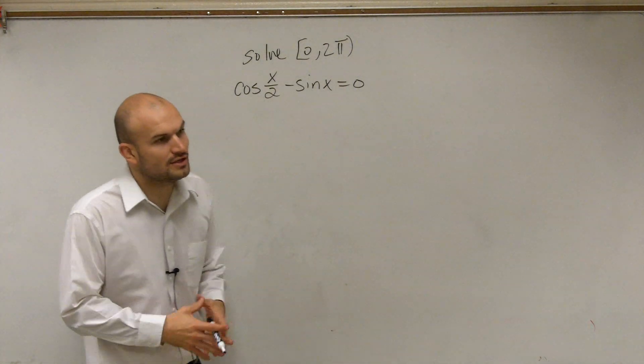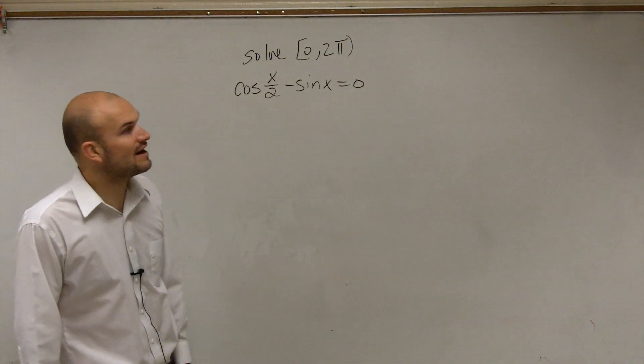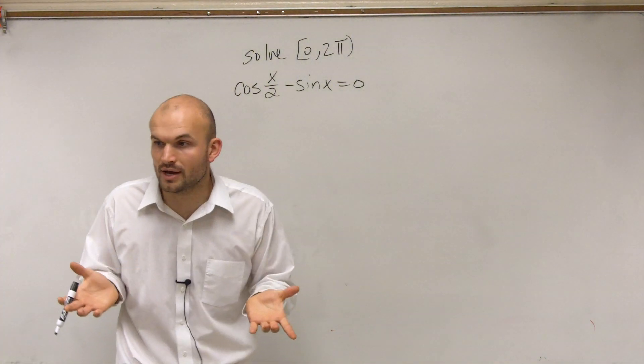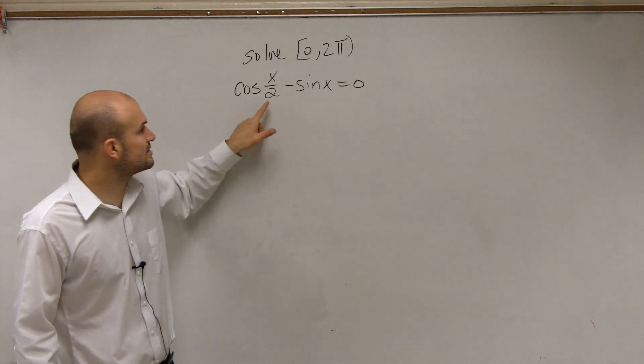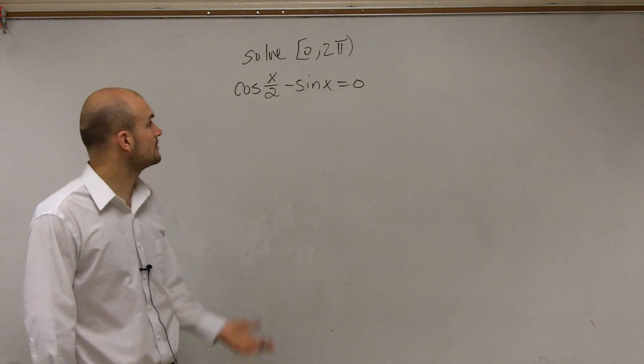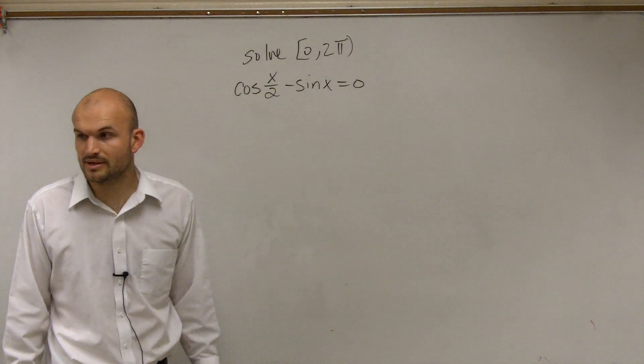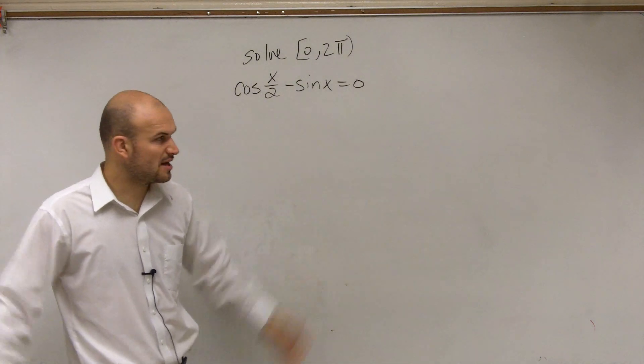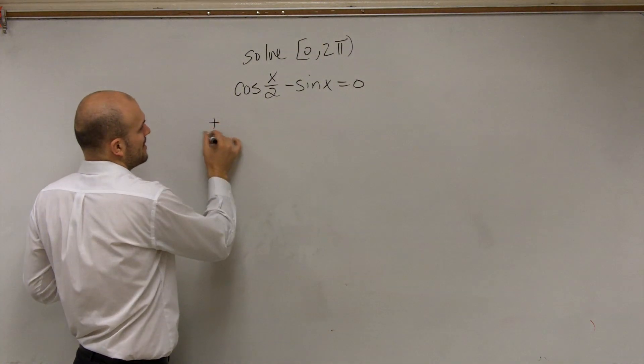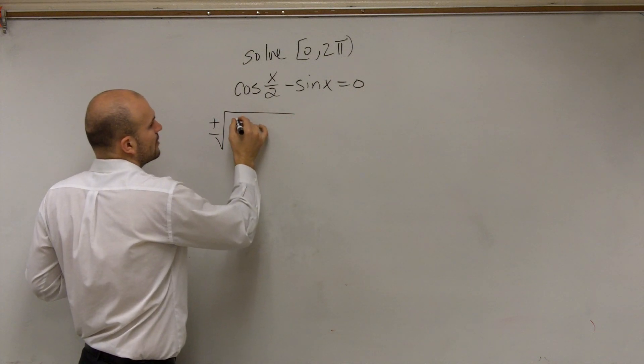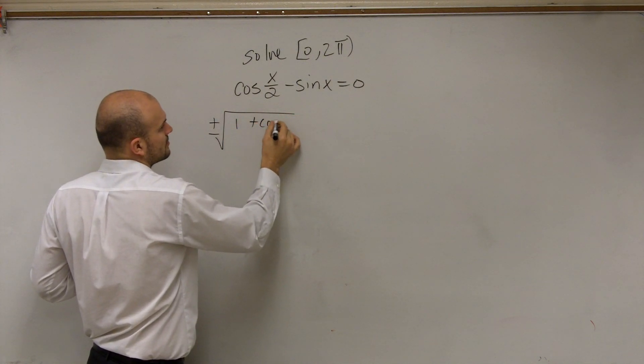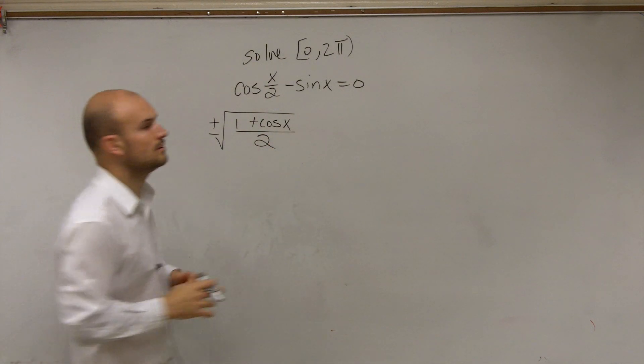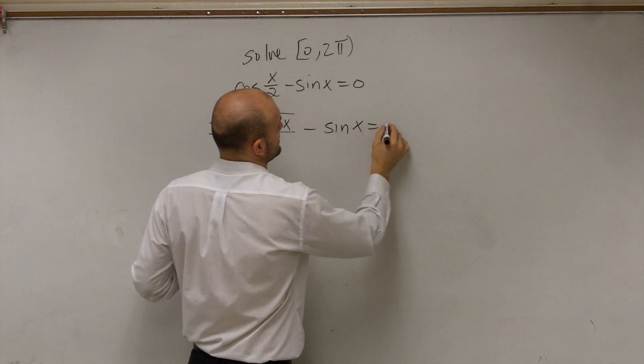So what I ask you to look at is we have the sine of x divided by 2. I gave you guys this little half sheet of formulas that you guys can apply, right? So can we now rewrite what the sin(x/2) is? Can we plug that formula in for it? Yeah, why not. So that's going to be, if my memory serves me correct, the square root of (1 + cos(x))/2 minus sin(x) equals 0.